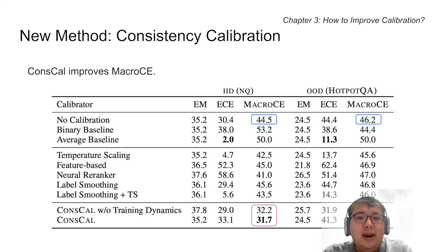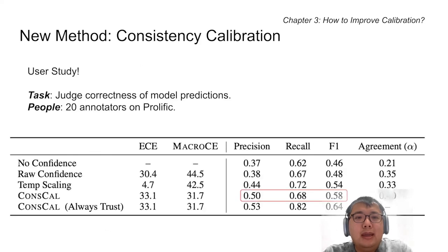Beyond automatic evaluation, more importantly, we conduct a human study where we present annotators 100 questions and the model predictions. We ask them to decide whether each prediction is correct. We compare the effect of only showing the predictions without the confidence, showing the raw model confidence, showing confidence calibrated by temperature scaling, as well as ConsCal. Showing the confidence obtained by ConsCal significantly improves the human judgment much better than raw confidence or temperature scaling.